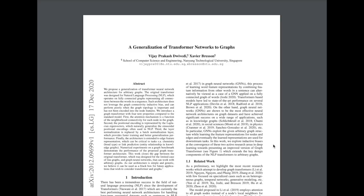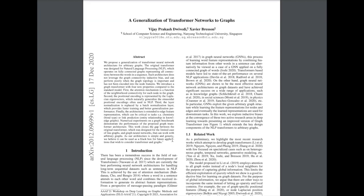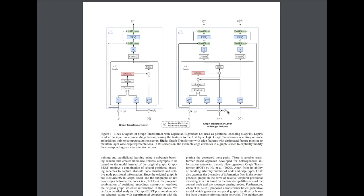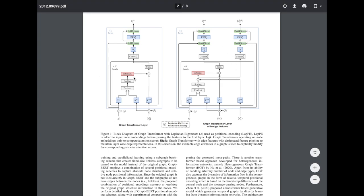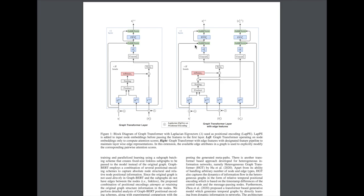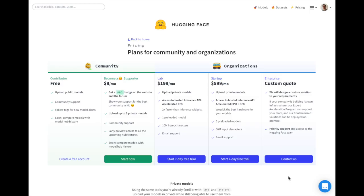A generalization of transformer networks to graphs is about moving away from the line-graph structure of NLP transformers to apply this architecture to irregular graphs like molecules or social networks. In NLP, the transformer treats every word as connected to every other word, and attention weights learn the edges in this regular graph. This paper uses Laplacian embeddings and a new graph transformer layer to generalize the architecture to irregular graphs like molecular and social network graphs.